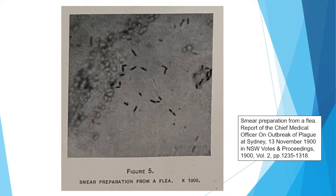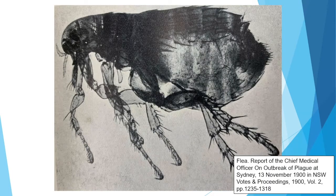Symptoms of the plague included things like swollen lymph nodes, fever, chills, headaches, fatigue, muscle aches and pain, coughing, nausea, vomiting, diarrhoea, delirium, and death. Here we have a picture of the flea. The role of fleas was demonstrated in 1898, and that work led to treatments such as insecticides, antibiotics, and plague vaccines.